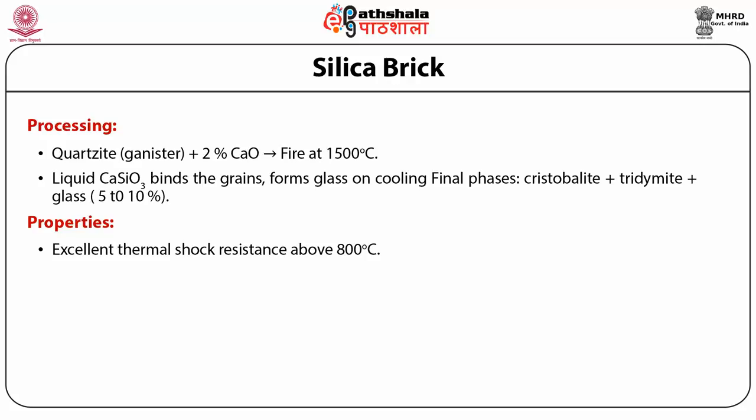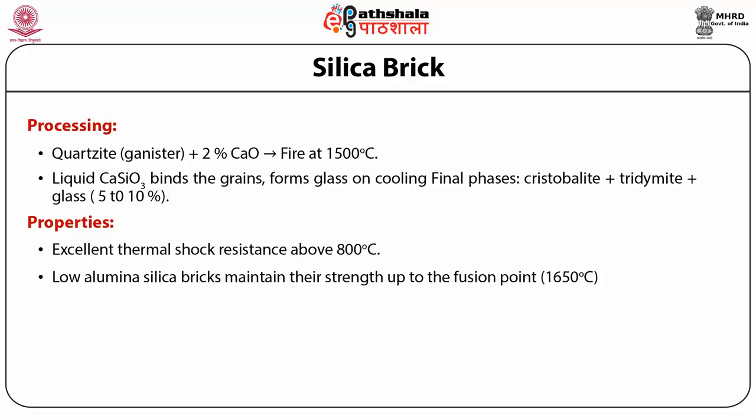Silica bricks are not used in applications where frequent shutdowns or cooling below 800°C is required. The alumina silica phase diagram shows that a low melting point eutectic forms near the silica end; a small amount of alumina will lead to eutectic formation and degrade the brick. For this reason, super silica bricks with low alumina content are used in high temperature applications. Such bricks retain nearly their full strength almost up to their fusion point, which is 1685 to 1800°C.